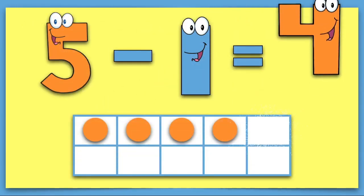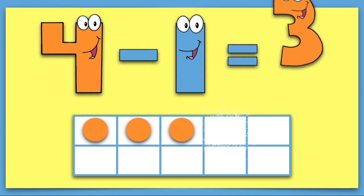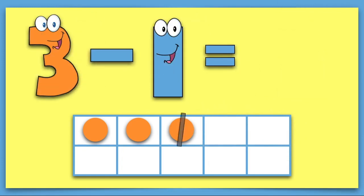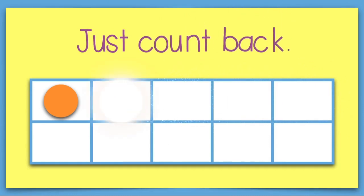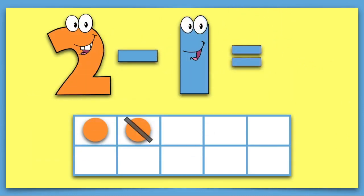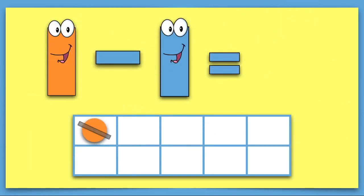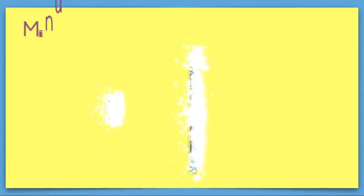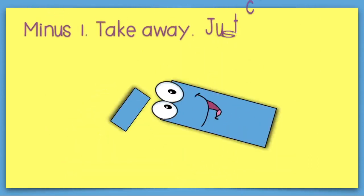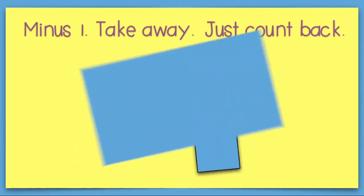5 minus 1 equals 4, 4 minus 1 equals 3, 3 minus 1 equals 2, just count back. 2 minus 1 equals 1, 1 minus 1 equals 0. Minus 1, take away, just count back.